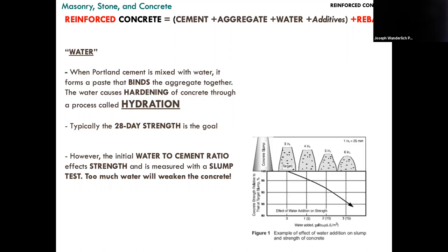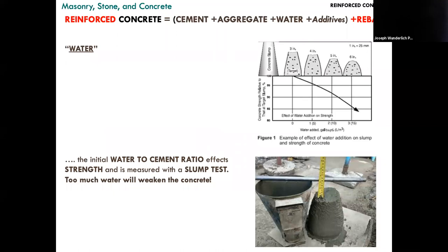If you're an engineer or architect going on a project, you want to test the strength of the concrete using something called a slump test. You put the concrete in a metal cone, pack it in, then turn it upside down quickly and pull it off. You see how much it slumps down, and that correlates directly to the strength of the concrete.